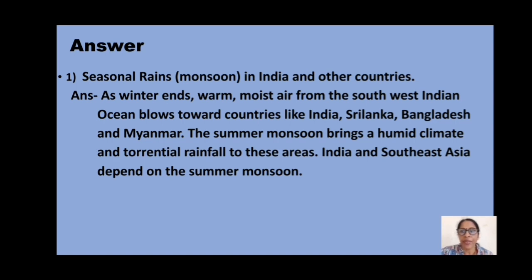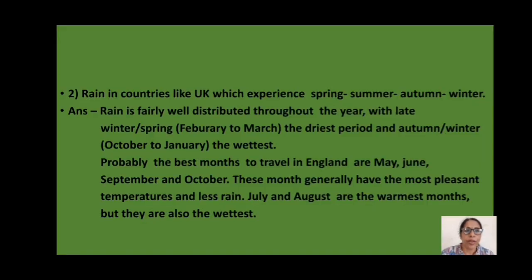As winter ends, warm, moist air from the southwest Indian Ocean blows toward countries like India, Sri Lanka, Bangladesh, and Myanmar. The summer monsoon brings a humid climate and torrential rainfall to these areas. India and Southeast Asia depend on the summer monsoon.